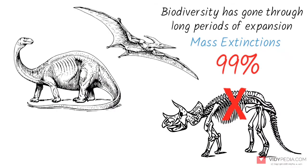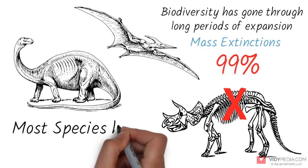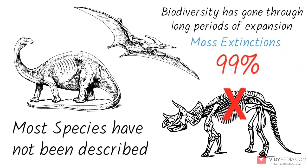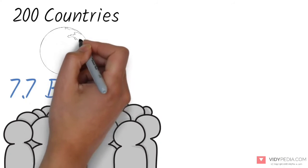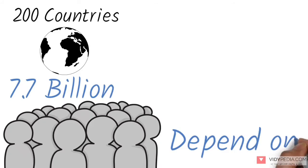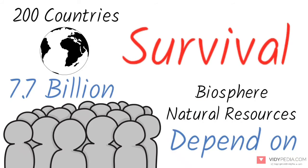Estimates of the number of species on Earth today vary widely. Most species have not been described. Currently, over 7.7 billion humans in 200 countries live on Earth, and depend on its biosphere and natural resources for their survival.